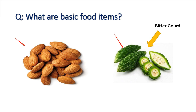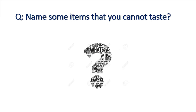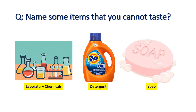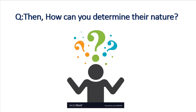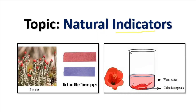Till now we have learned how to identify the nature of edible items, but what about non-edible items? There are multiple non-edible items available on earth — how can we determine their nature? Can you name some items you cannot taste? For example, laboratory chemicals, detergents, and soaps. We know the nature of these substances, but how is it possible to determine them? That is the interesting question behind today's topic.